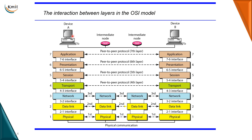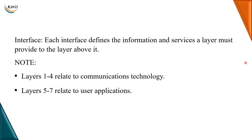We are showing a connection between two hosts or two devices A and B connected on a network with intermediate nodes in between, where each node or each device has a network architecture with the seven layers of the OSI model. There is an interface between each layer, where each layer provides services or information to the layer above it through the interface.